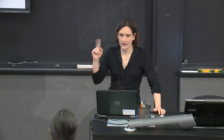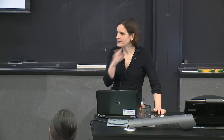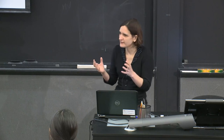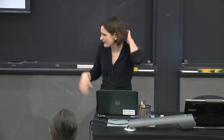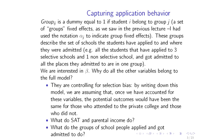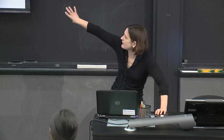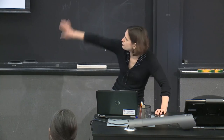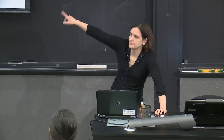For example, all students who applied to three selective private schools and one non-selective school and were admitted everywhere form one group. Another group is students who applied to one state school and two selective private schools and got in everywhere. Many groups have only one person and drop out. About 150 groups have more than one person. We're interested in beta — not in the SAT effect or parental income effect per se.